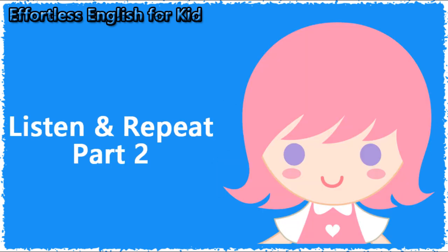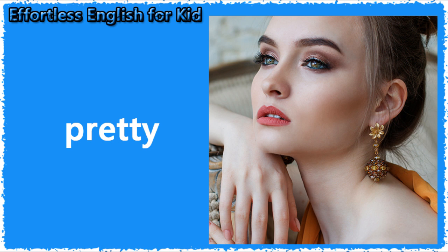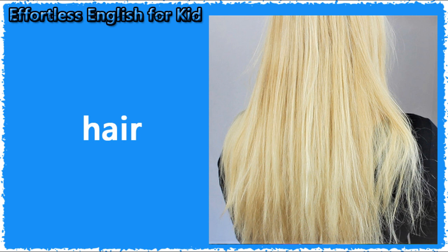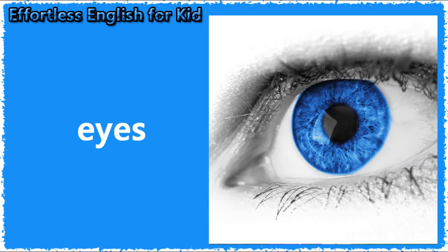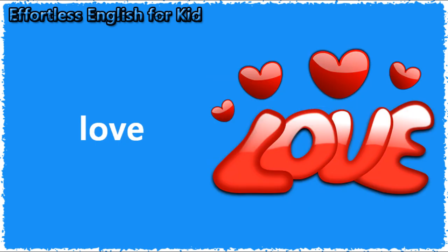Listen and repeat, part two. There is a... There is a girl. She is very... She is very pretty. She has a... She has a doll. The doll has yellow... The doll has yellow hair. The doll has blue eyes. She kisses the doll. She loves the doll.